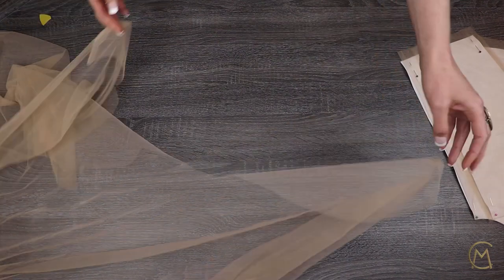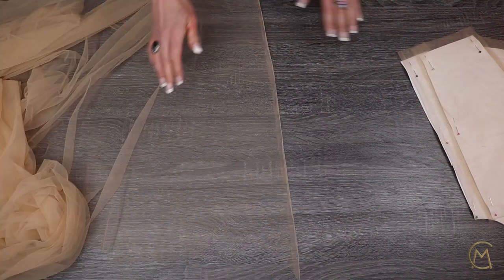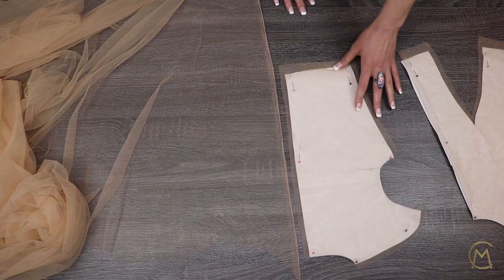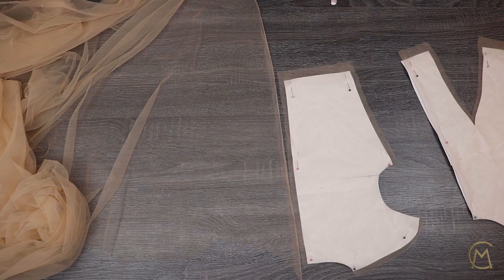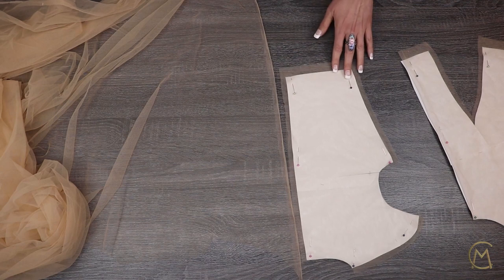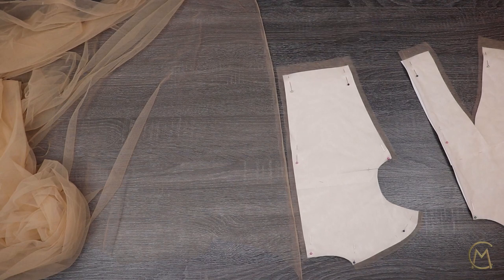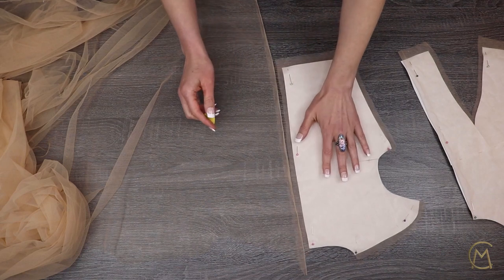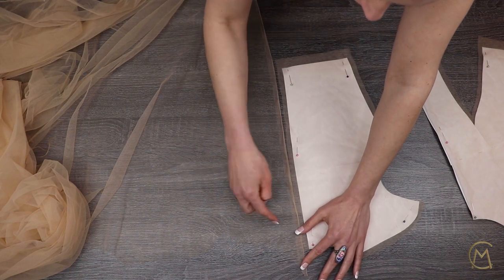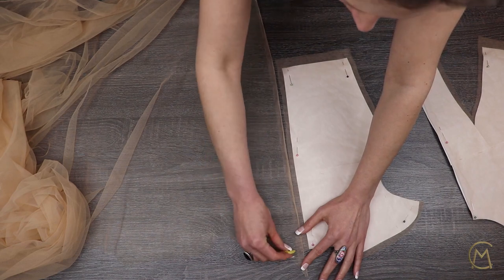And now we will need to cut out a line for the back so that we can prepare for the side that the buttons will go on. To do that we need a strip that is parallel to the thread line. This strip needs to be 2 centimeters wide and have the same exact length as the back.